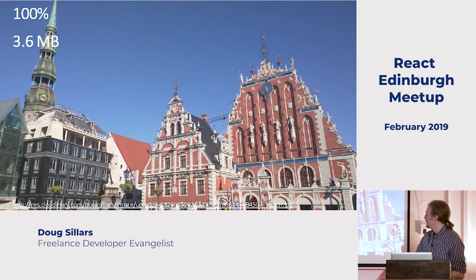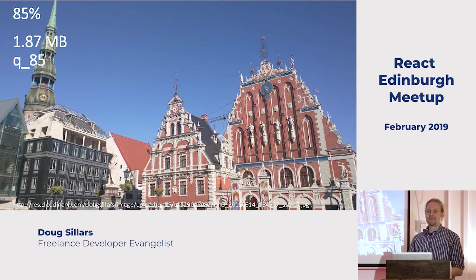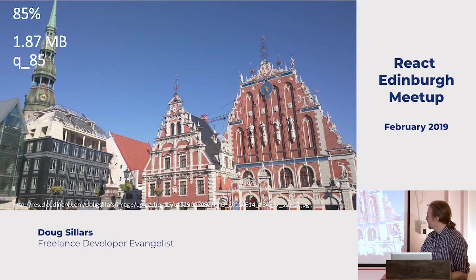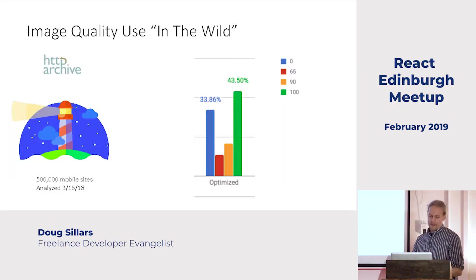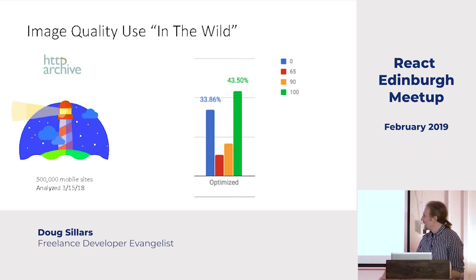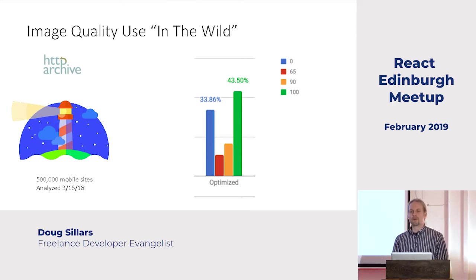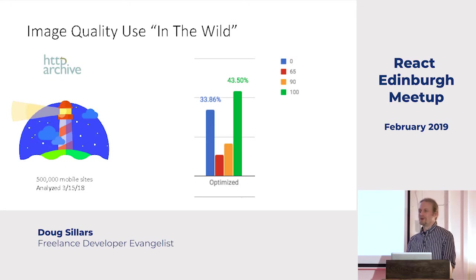So what does that look like? I've got this picture here at 3.6 megabytes. At quality 85, it's half the size — 1.87 megabytes — and you can't tell the difference. Those actually are different images. Looking inside the HTTP Archive Lighthouse data, 33% of websites completely fail on lowering quality. That median website at the 50th percentile of failure would be 2.8 seconds faster to load and save about 420 kilobytes of data.